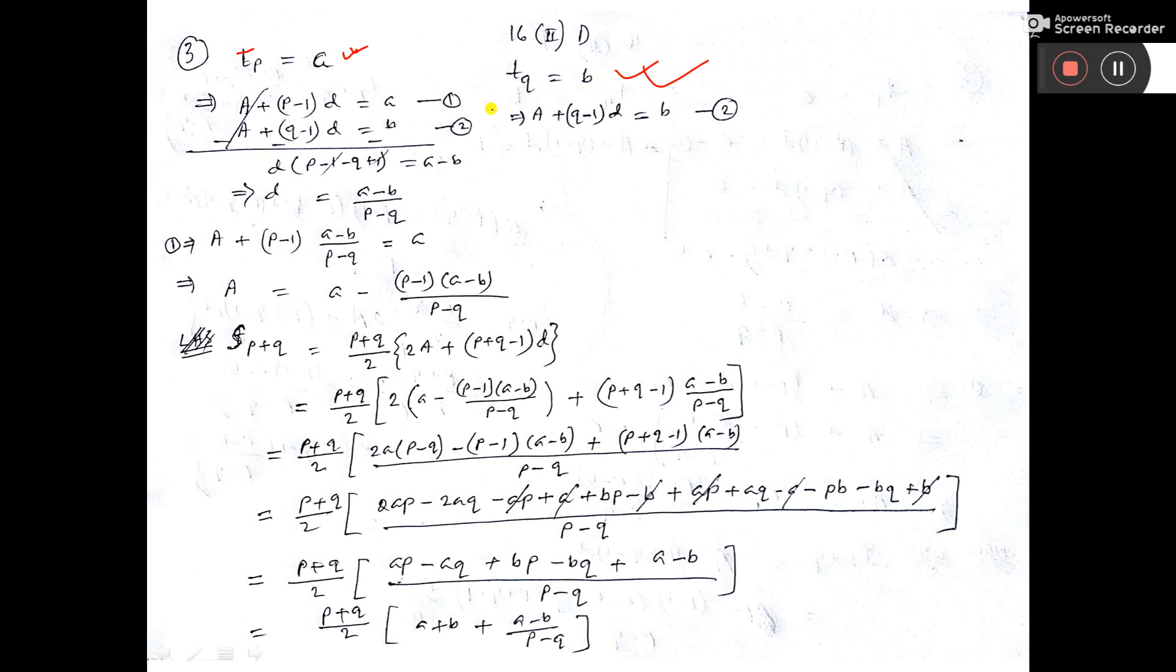Now if you consider the first term A and common difference D, then TP that is A plus P minus 1 times D equals A, and TQ that is A plus Q minus 1 times D equals B.